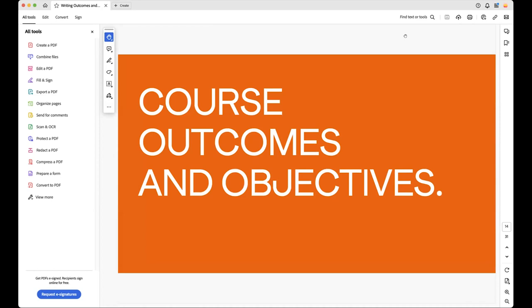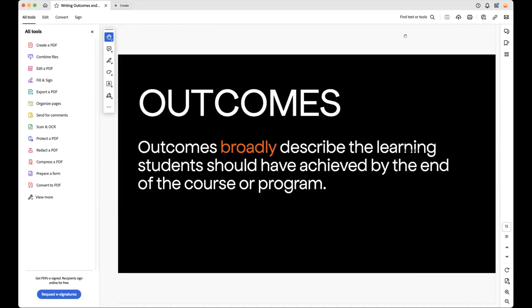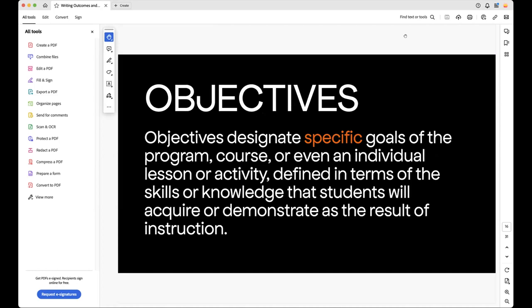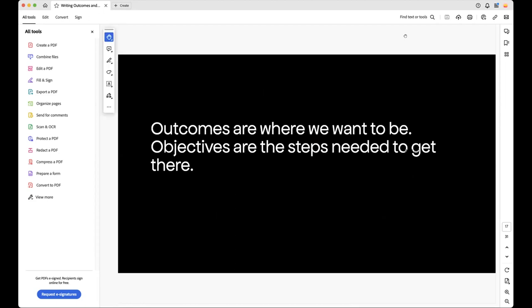So how do these two things differ? Outcomes broadly describe the learning the student should have achieved by the end of the course or a program. And objectives designate specific goals of the program, course, or even an individual lesson or activity that you have within a class. And that is defined in the terms of the skills or knowledge that a student will acquire or demonstrate as a result of that instruction. So in short, outcomes are where we want to be. Objectives are the steps needed to get there. My dad used to always say, I look at the big problem, I break it down into steps, and I walk those steps.